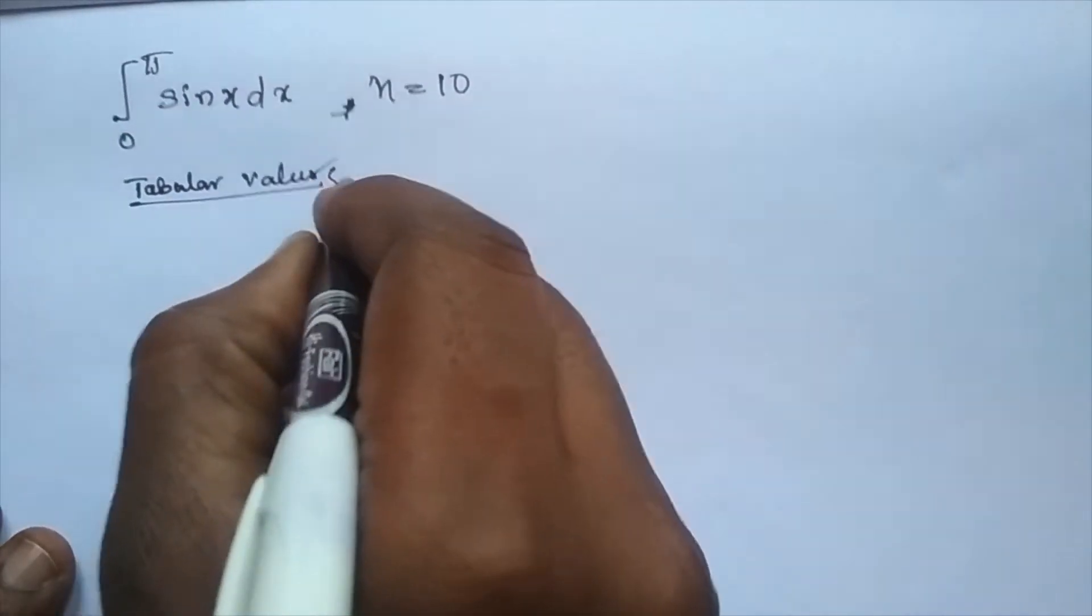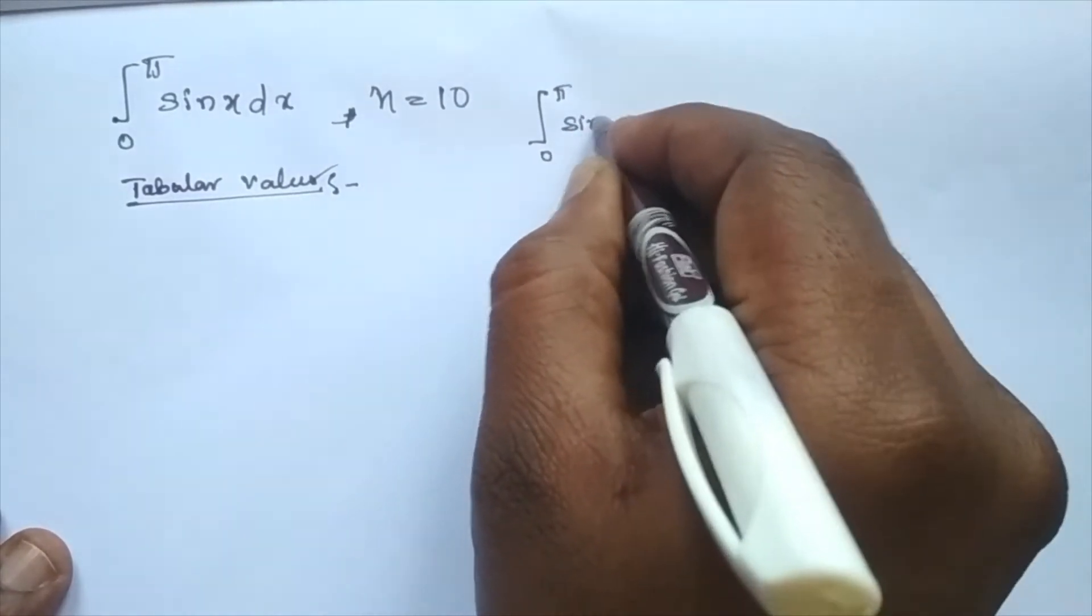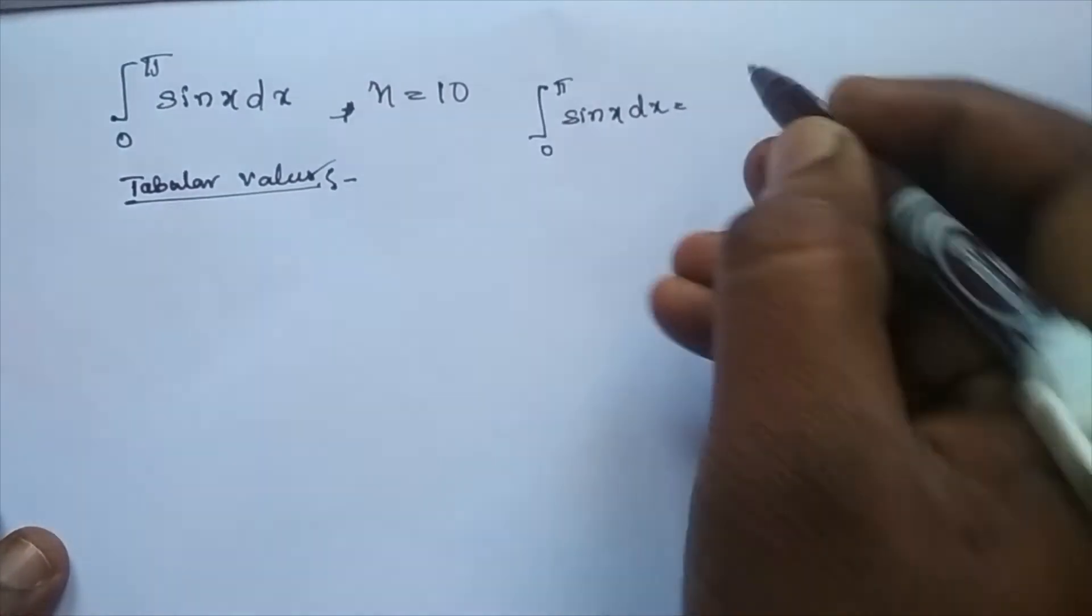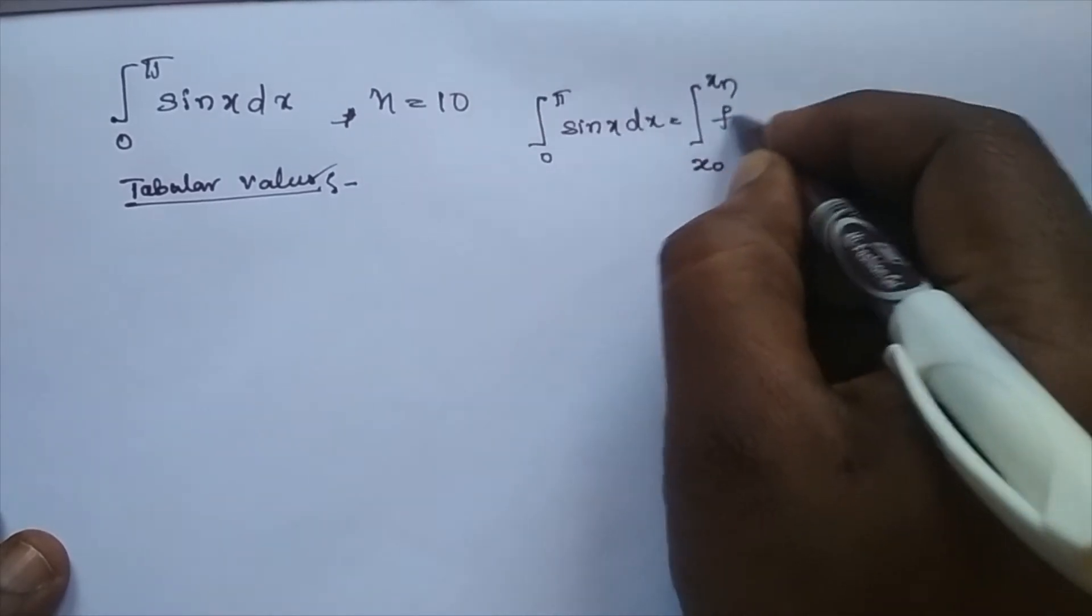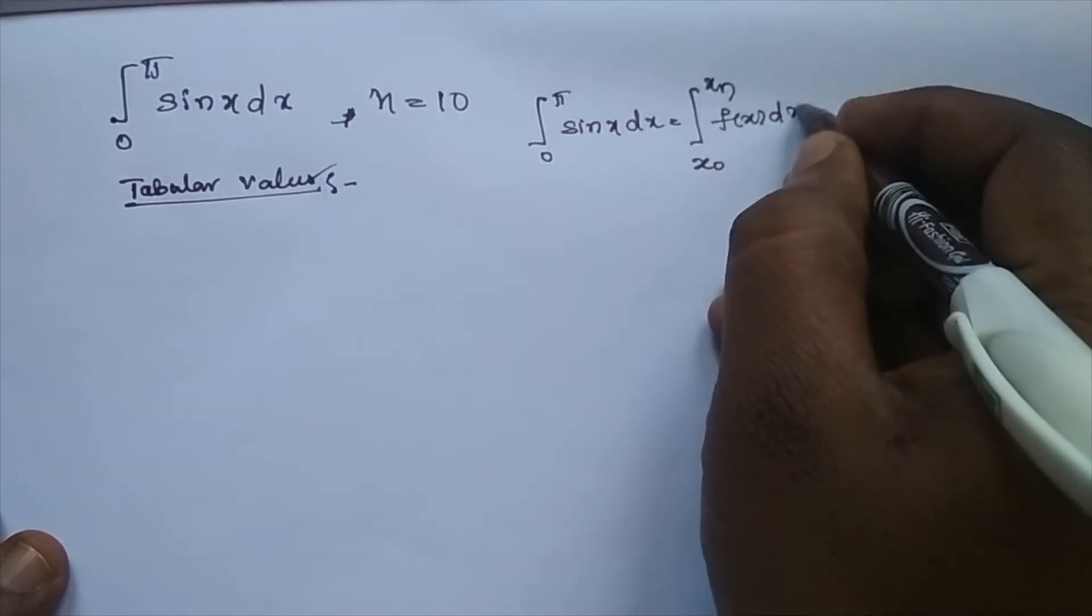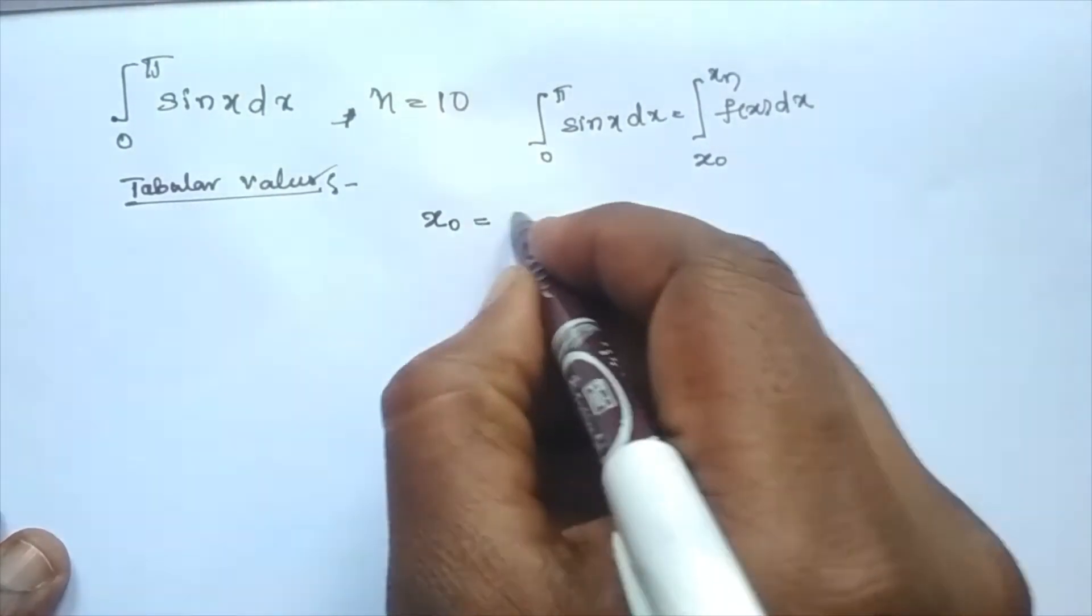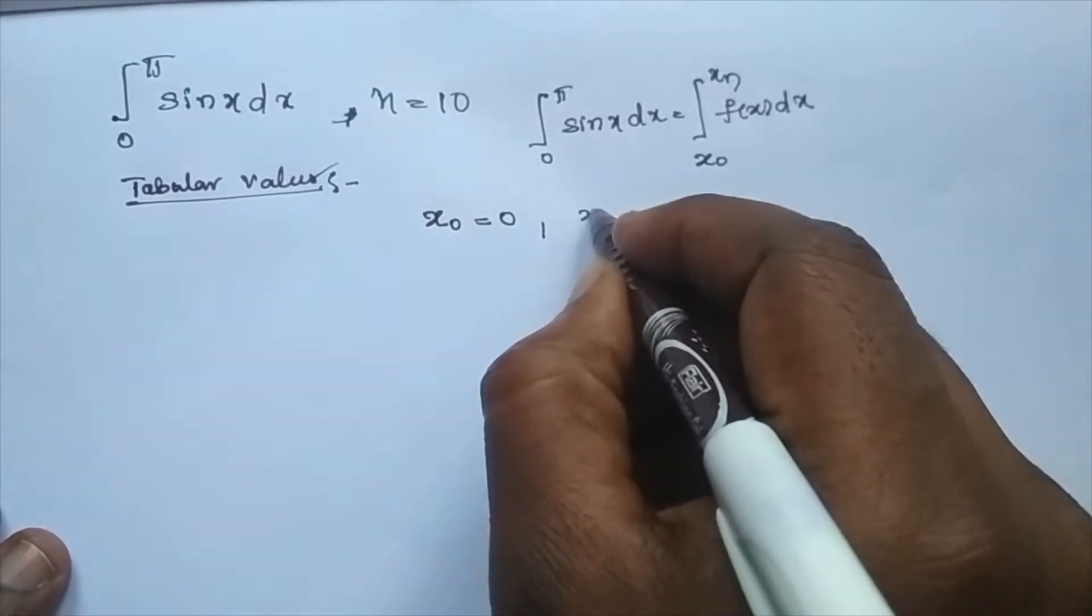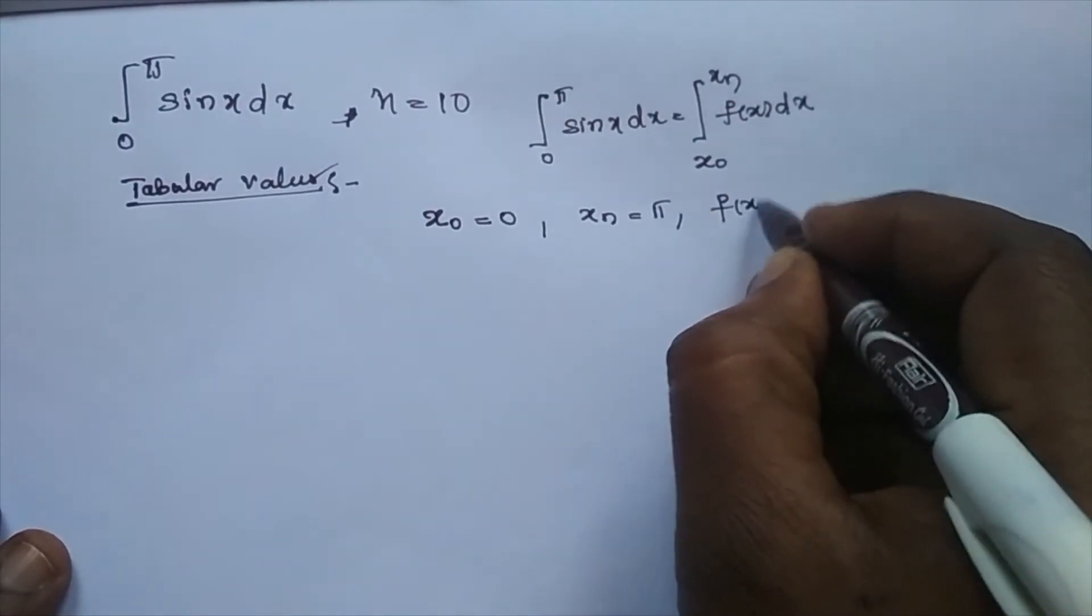How to construct the table? I can imagine this integral 0 to pi sin x dx is equal to integral x0 to xn f of x dx. This is the original form. Now I am taking x0 equal to 0, xn equal to pi, and f of x equal to sin x.